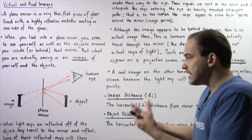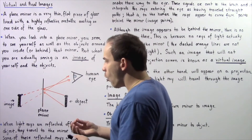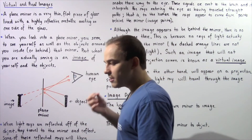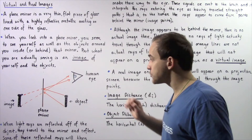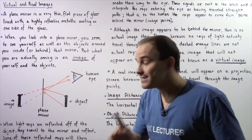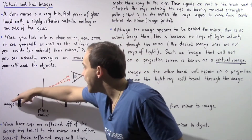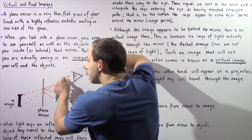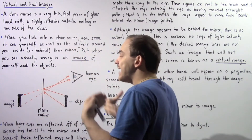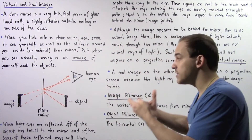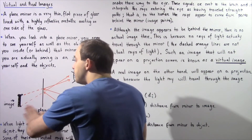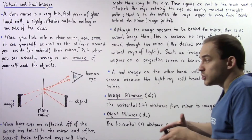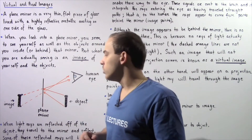The human eye receives these rays of light and transforms them into electrical signals, which are then sent to the brain. The brain interprets these rays of light as if they traveled straight pathways, and because of that, it forms an image of the object which appears to be behind the plane mirror. This type of image, which isn't actually there, is known as a virtual image.